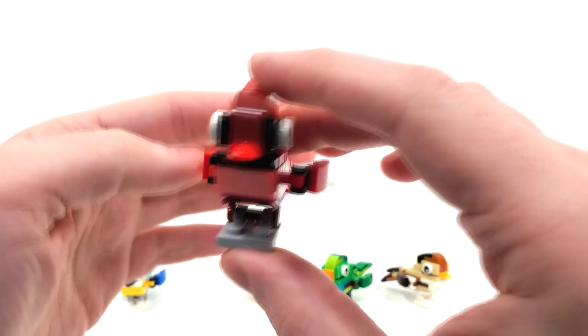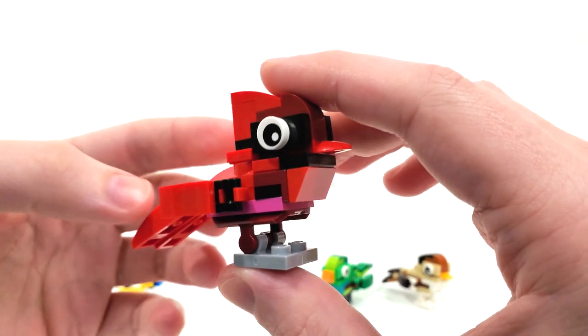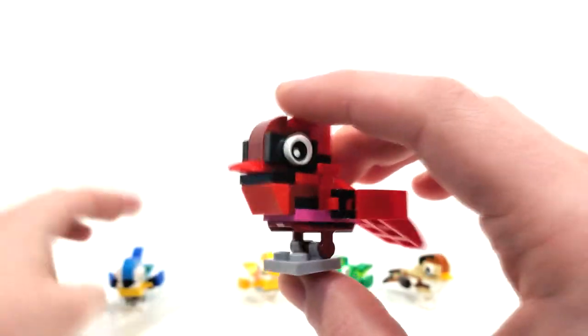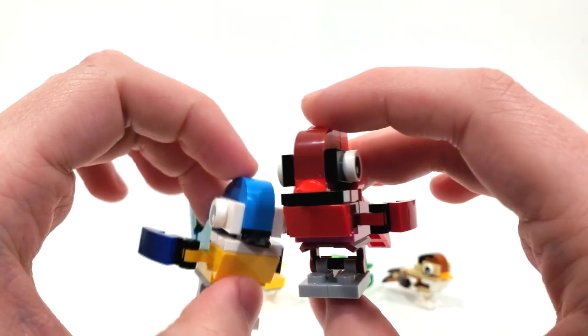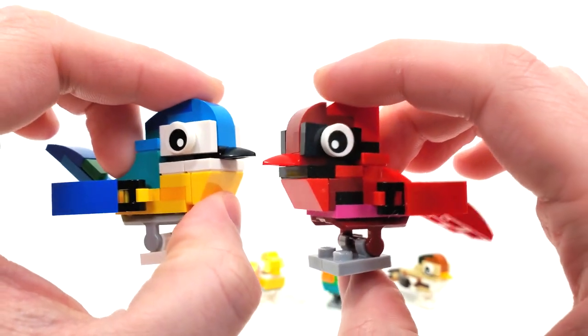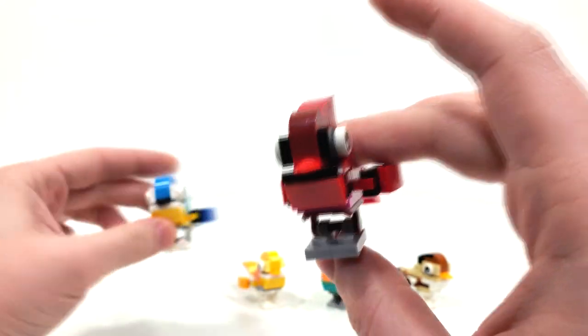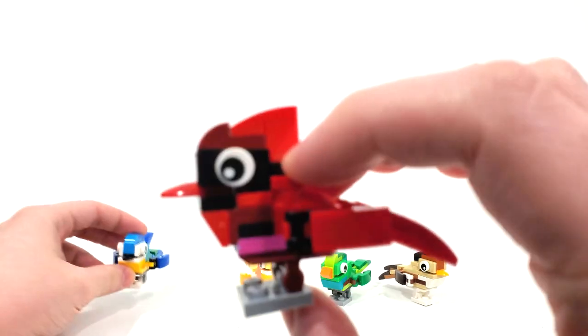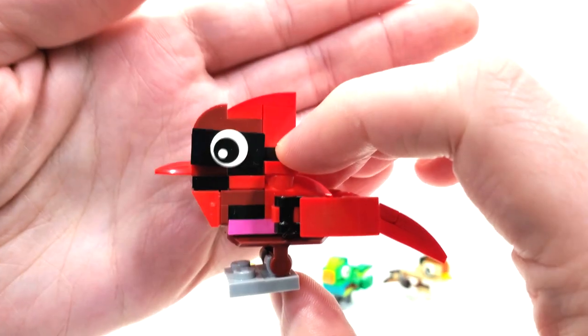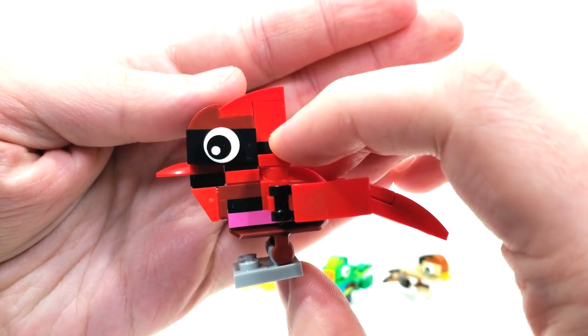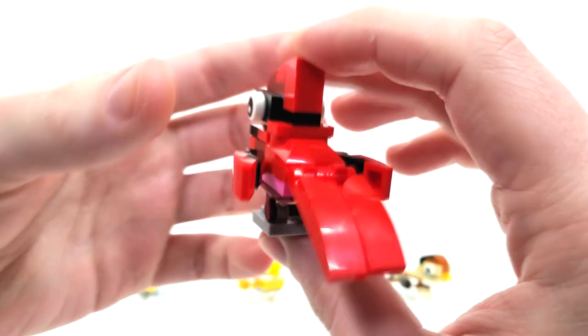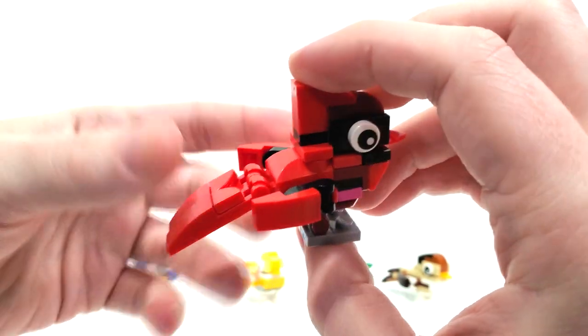Next up, we have the Northern Cardinal or the Red Bird, where you get the black around the beak area. Same building style as we saw for the Eurasian Blue Tit when it comes to the beaks and general shaping, though you do get some differences when it comes to the top head feathers, which I think turned out really great. You can see that with a little bit more of those anglings with the slope pieces. Same clip connections for the feet, tail feathers, and wings.